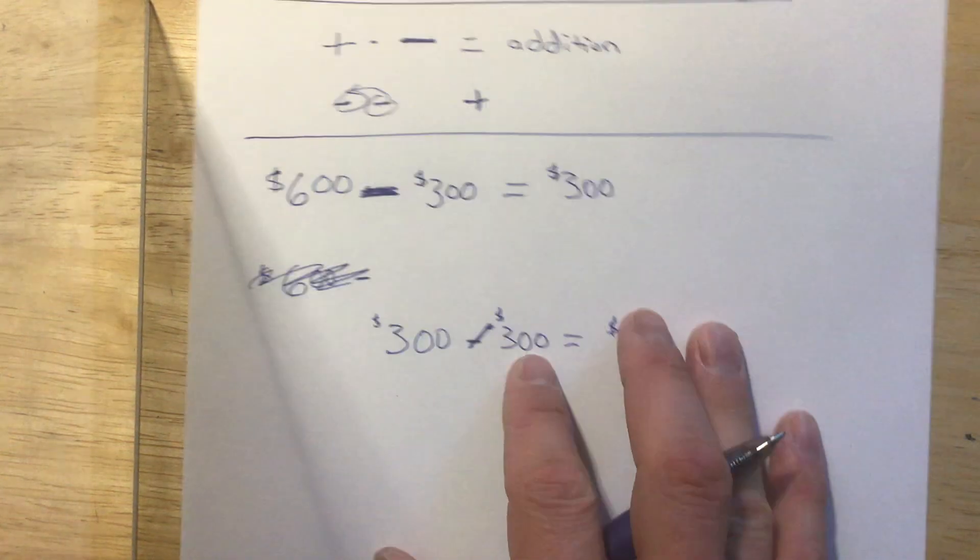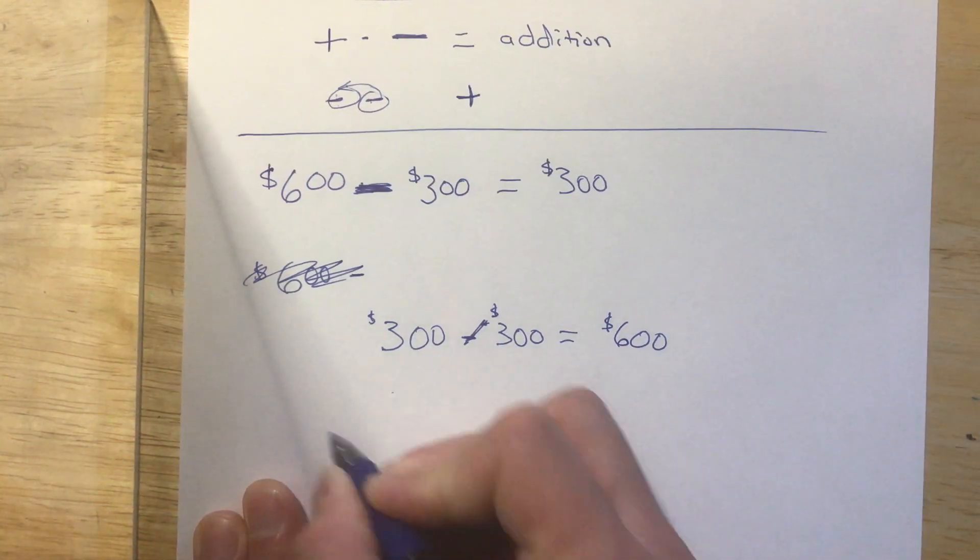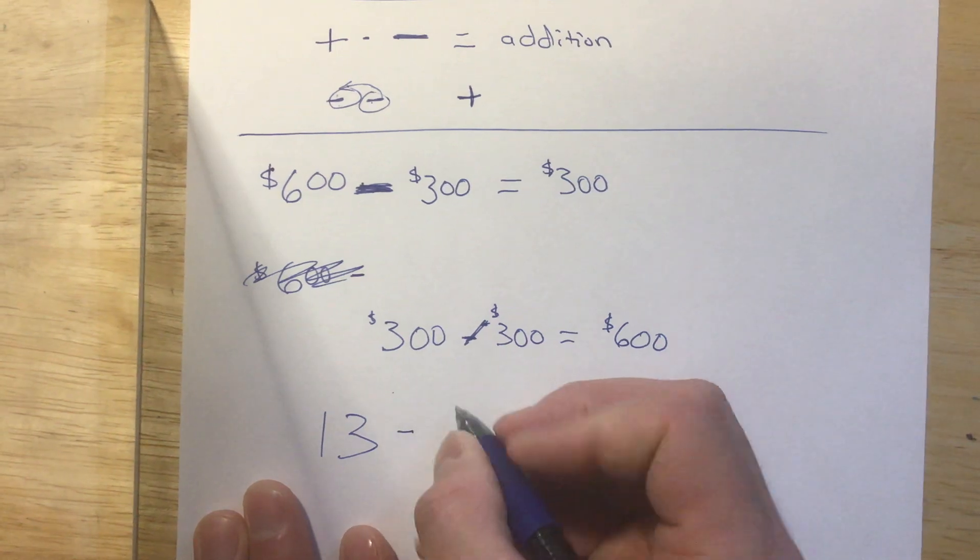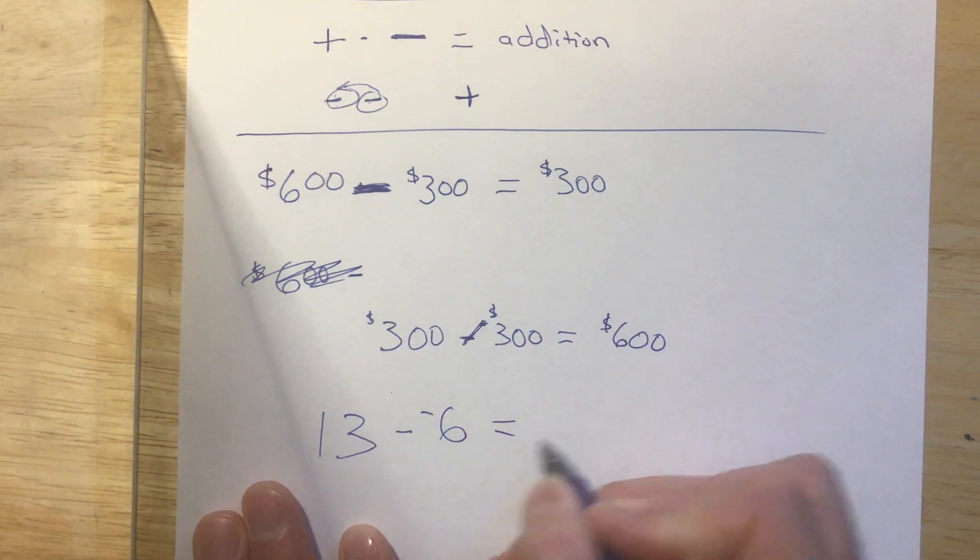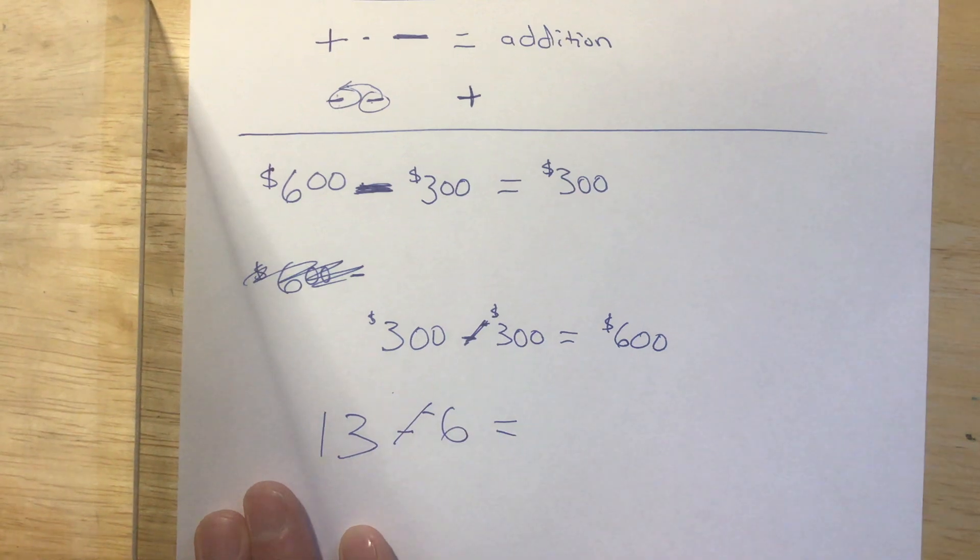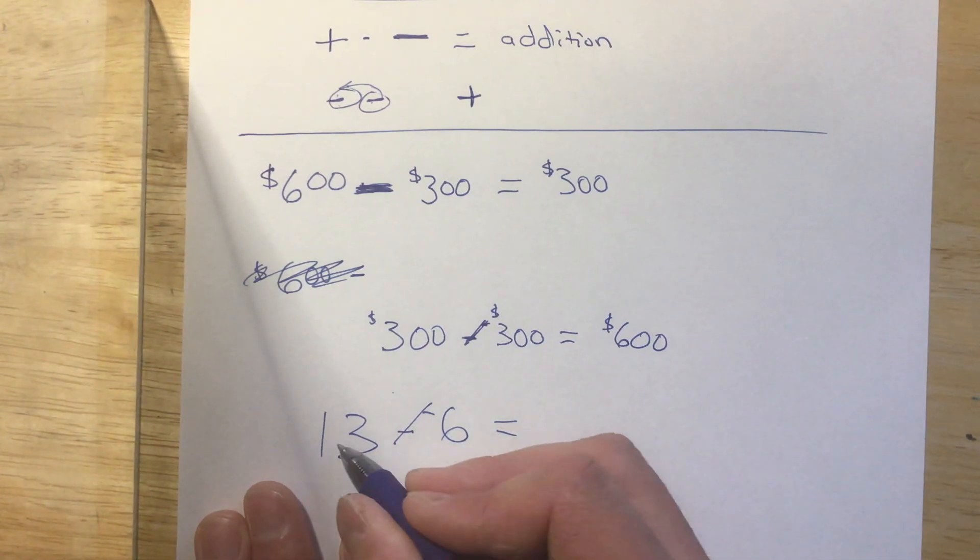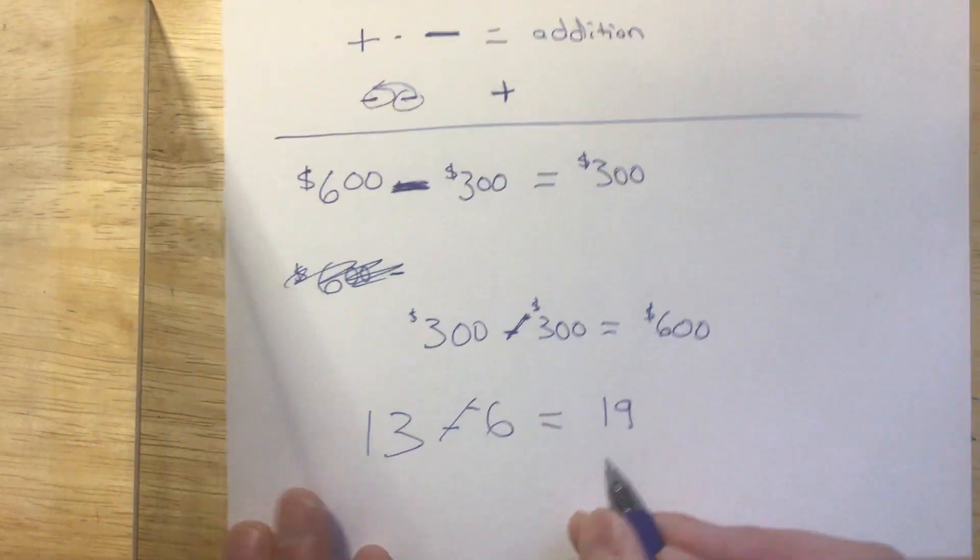So long story short, on today's work, whenever you see anything where it's, let's say, 13 minus negative 6, anytime you see minus a negative, these become plus signs. Two negatives next to each other become a plus. 13 plus 6, that'd be 19. 19 would be the answer.